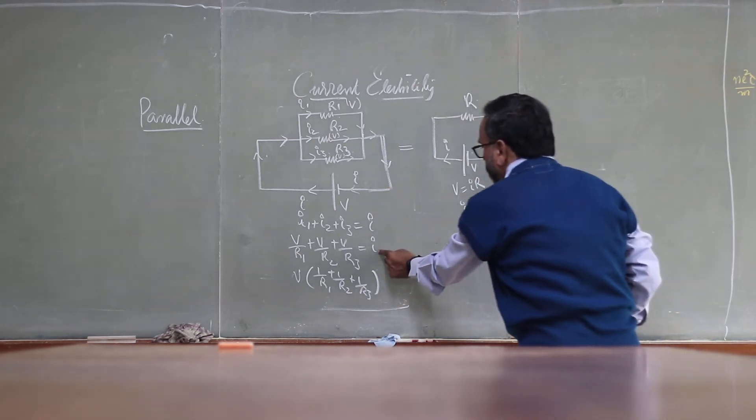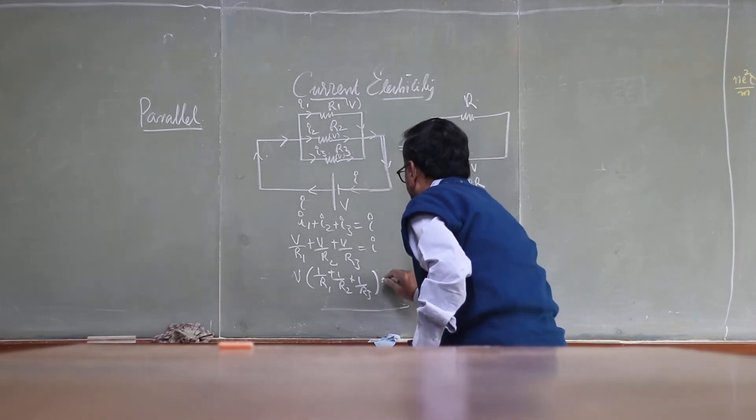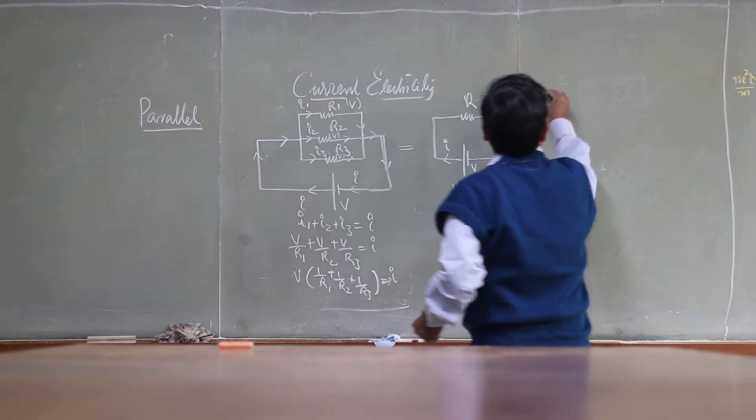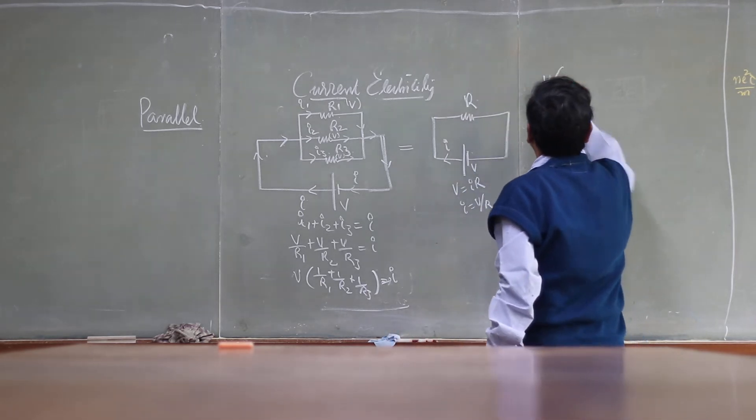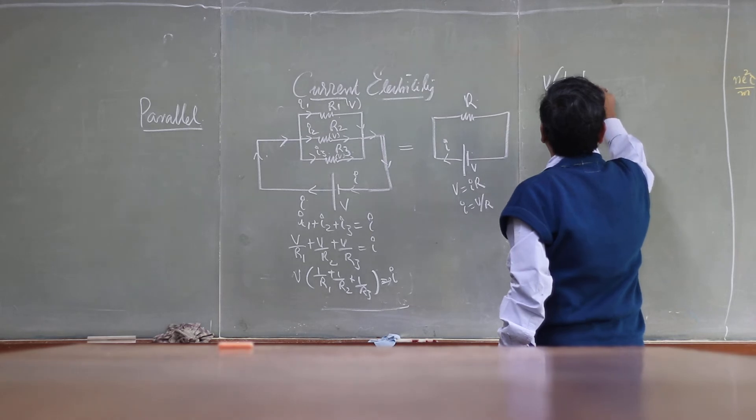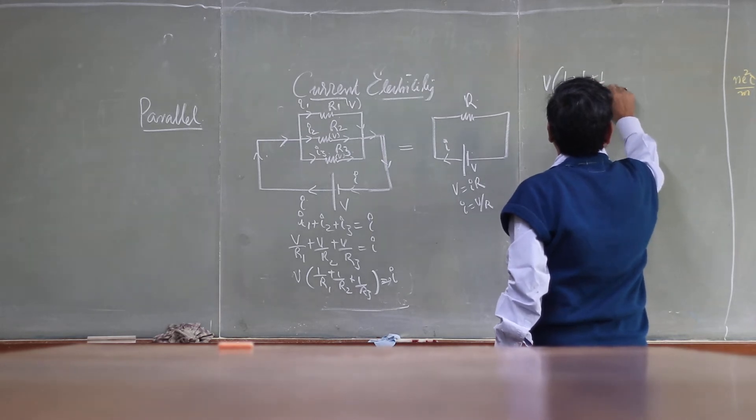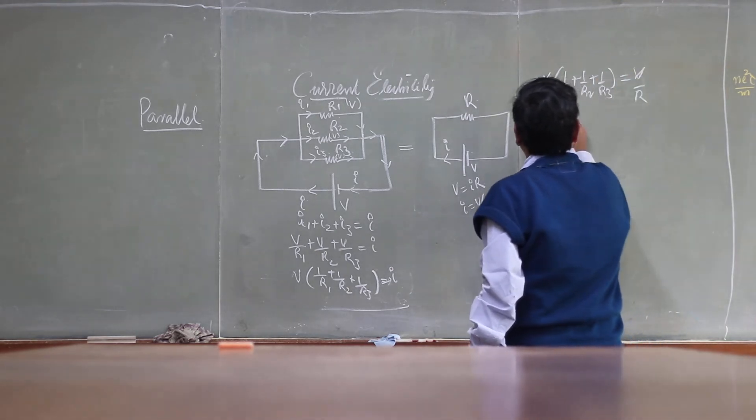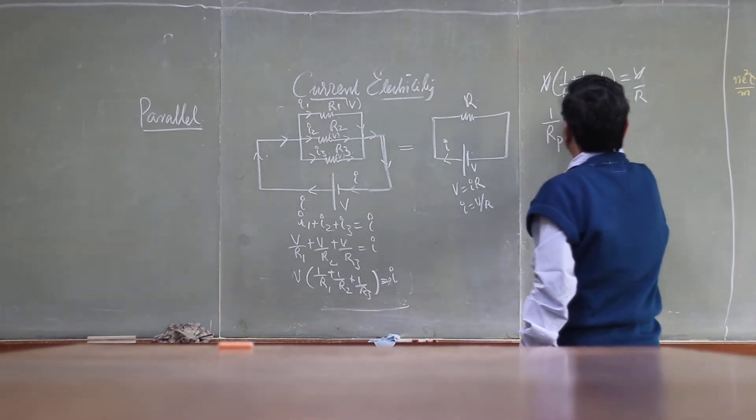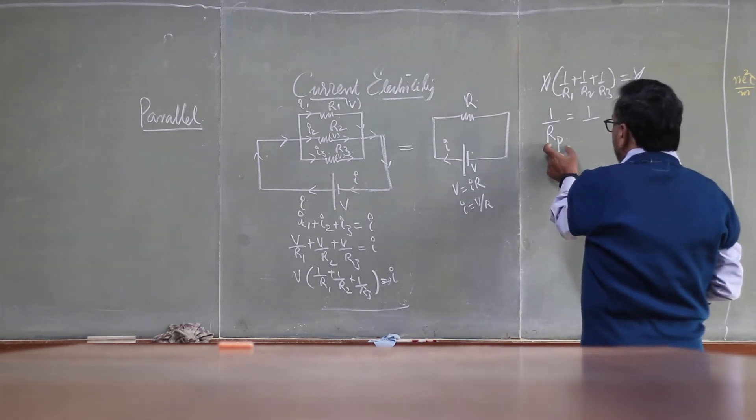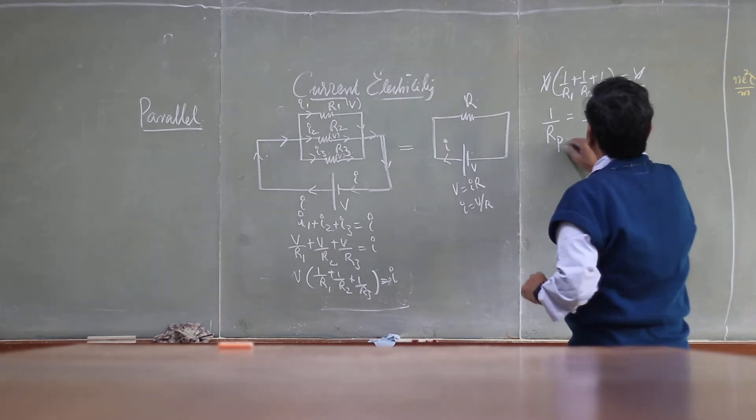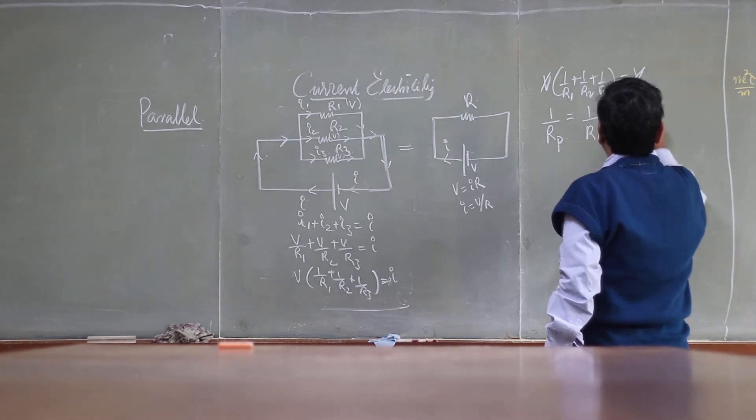Now we will replace this I here by V by R. So in this equation, the right side portion is V by R. So if I write V times 1 by R1 plus 1 by R2 plus 1 by R3 is equal to V by R, you can cancel out this V. And then finally the resultant resistance in parallel, if you consider that it is Rp where P is suffix representing parallel connection: 1 by Rp equals 1 by R1 plus 1 by R2 plus 1 by R3.